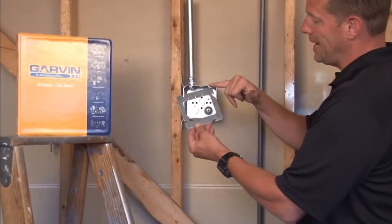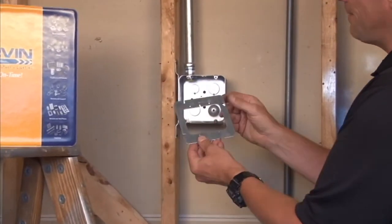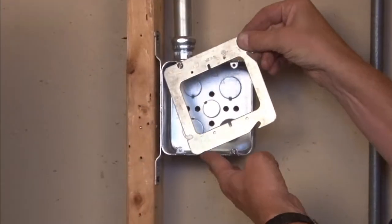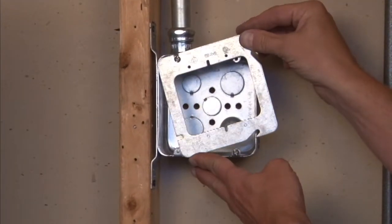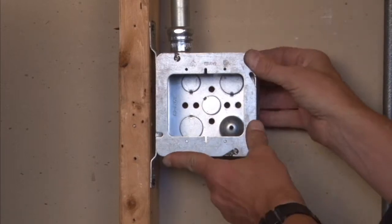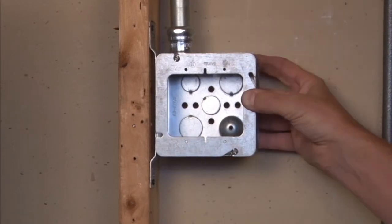This particular unit has no rays. It's perfectly flat and it mounts directly on a 4 and 11 sixteenth inch box by putting the slots directly over the box screws and tightening down.